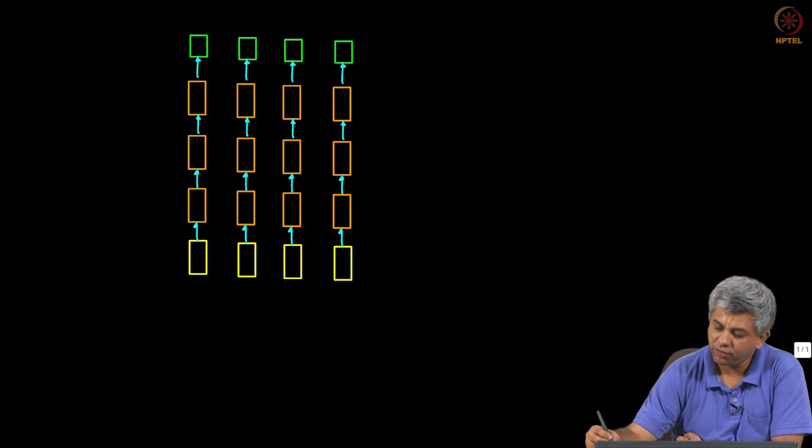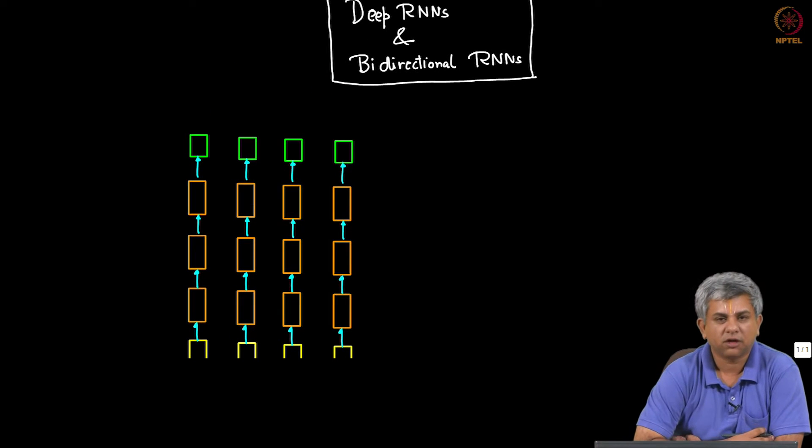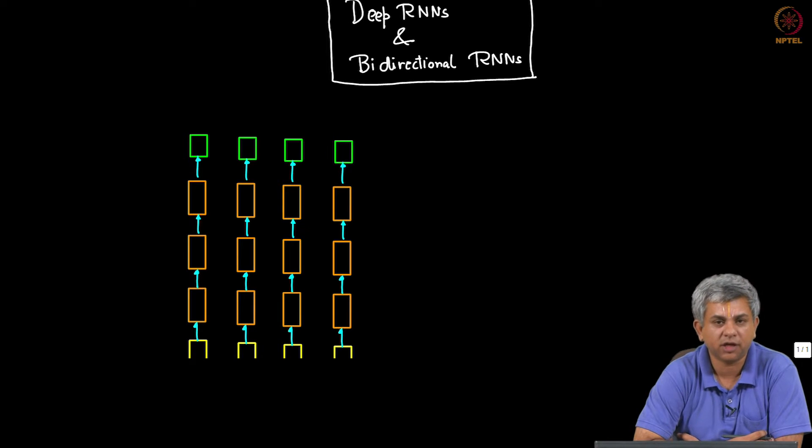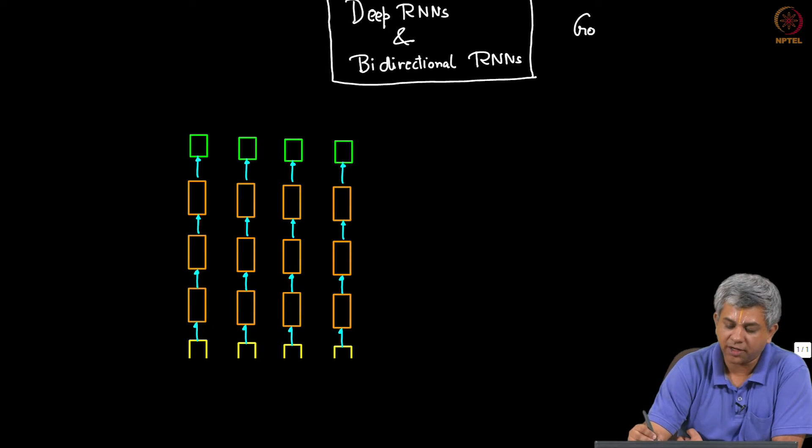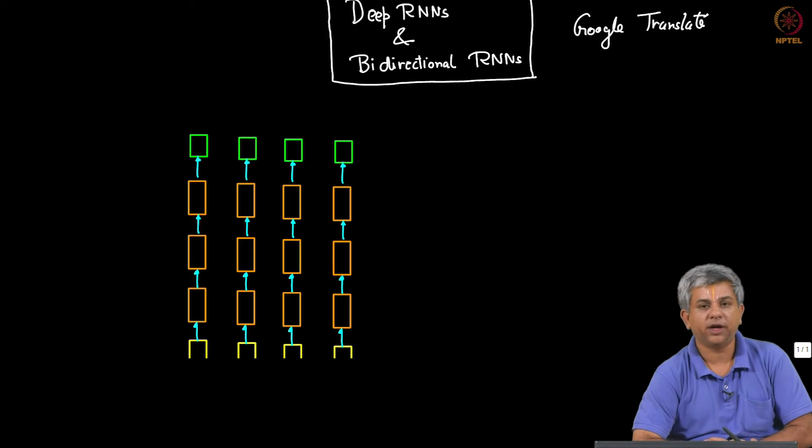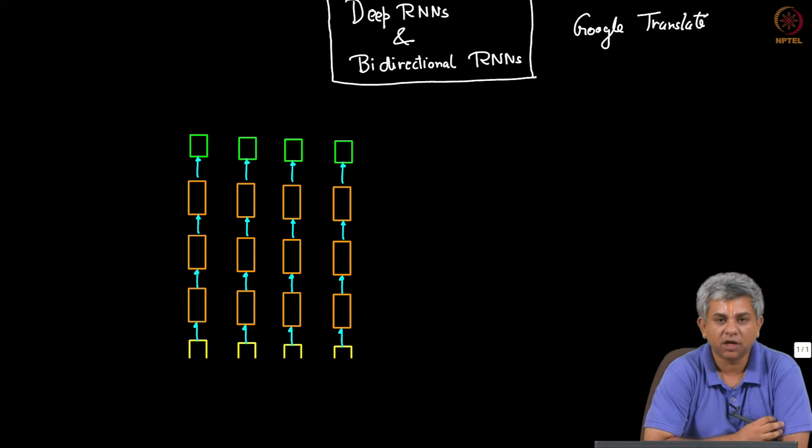Welcome back. In this video we will be looking at again at a very low level at deep RNNs as well as bidirectional RNNs. Deep RNNs are particularly important in language. For example, Google Translate uses deep RNNs at a certain level. The Google Translate that you will see at translate.google.com, we know because Google has published a paper that it uses at some level deep RNNs.